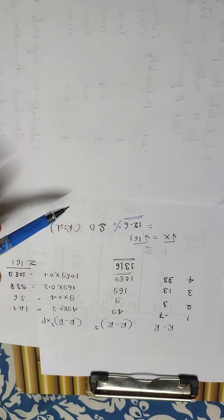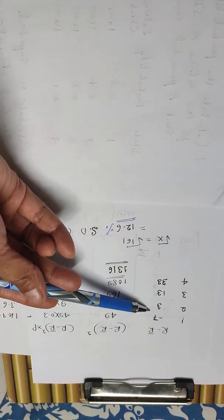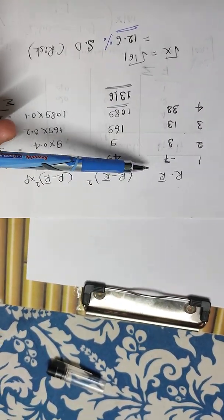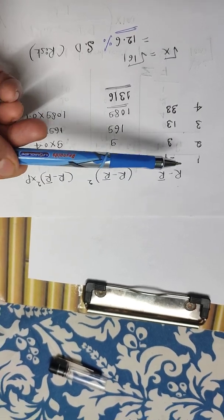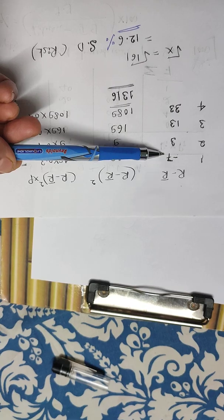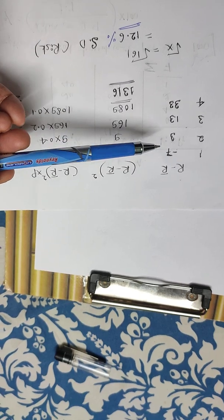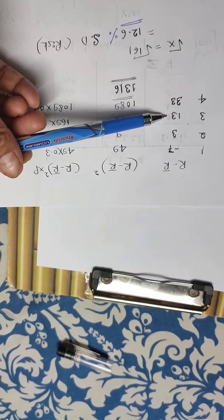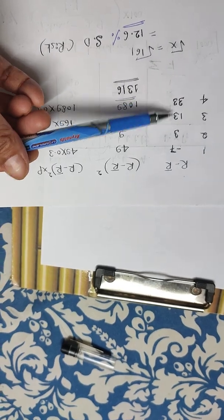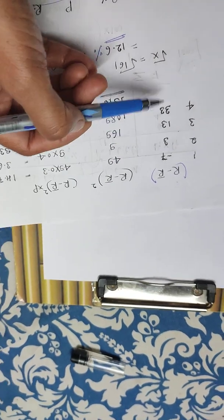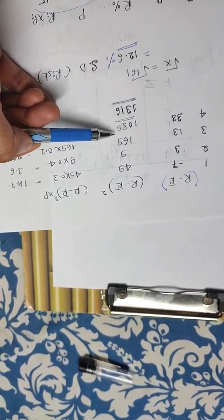For standard deviation, we already have R% values: 0, 10, 20, 40. R̄ (R-bar) is 7%. So (R − R̄) values are: 0 − 7 = −7, 10 − 7 = 3, 20 − 7 = 13, 40 − 7 = 33.